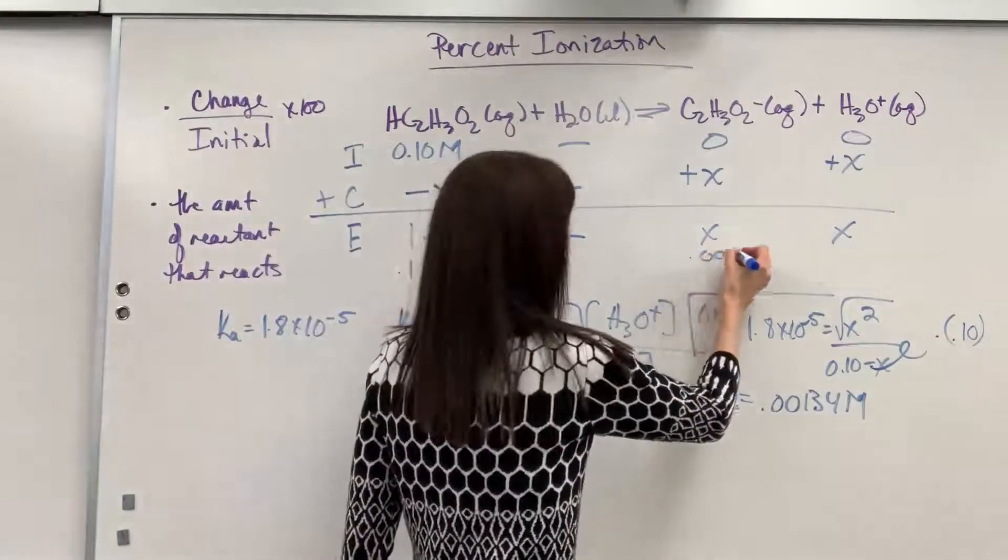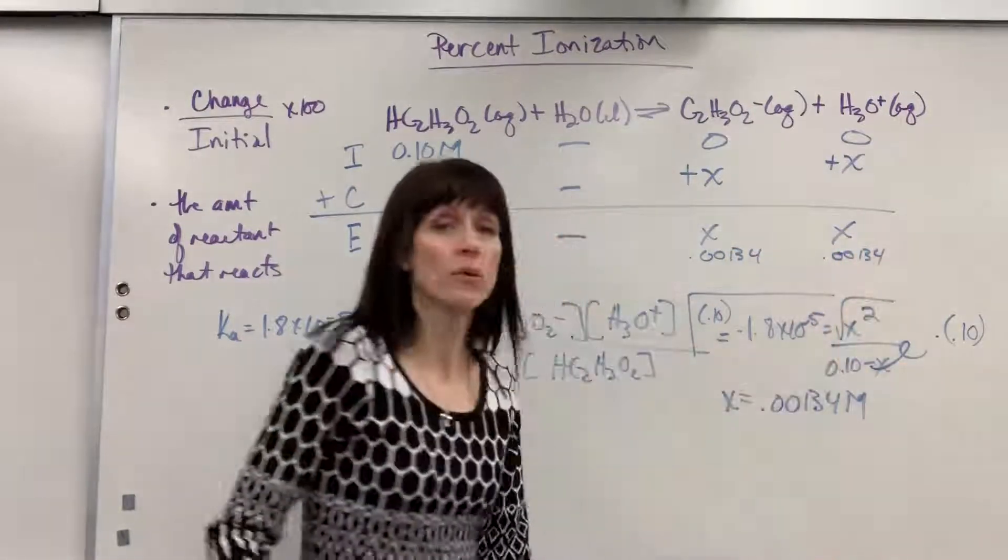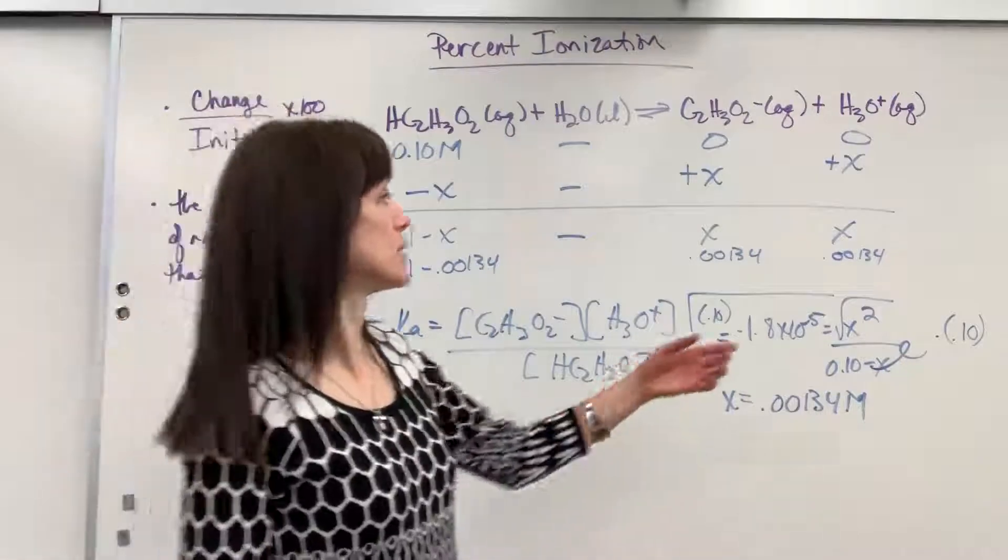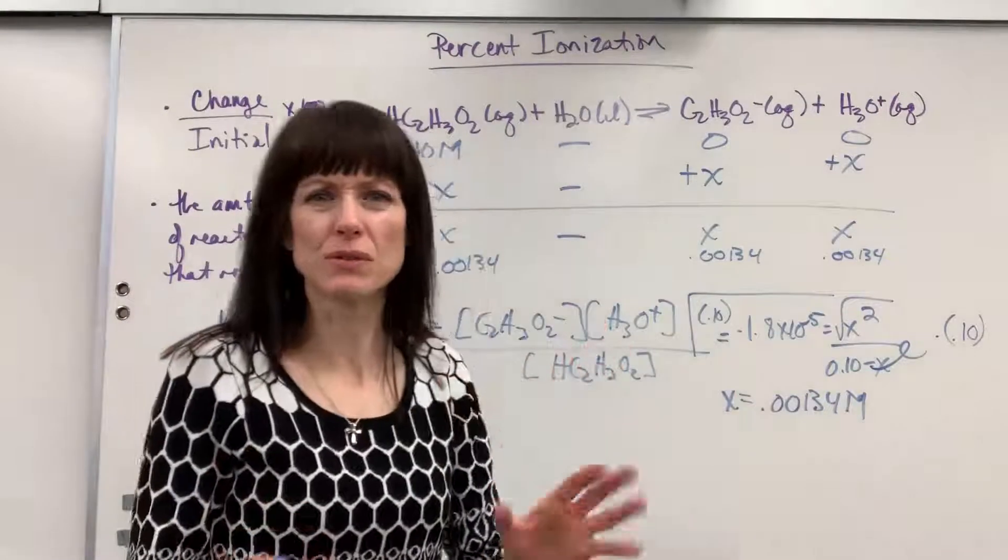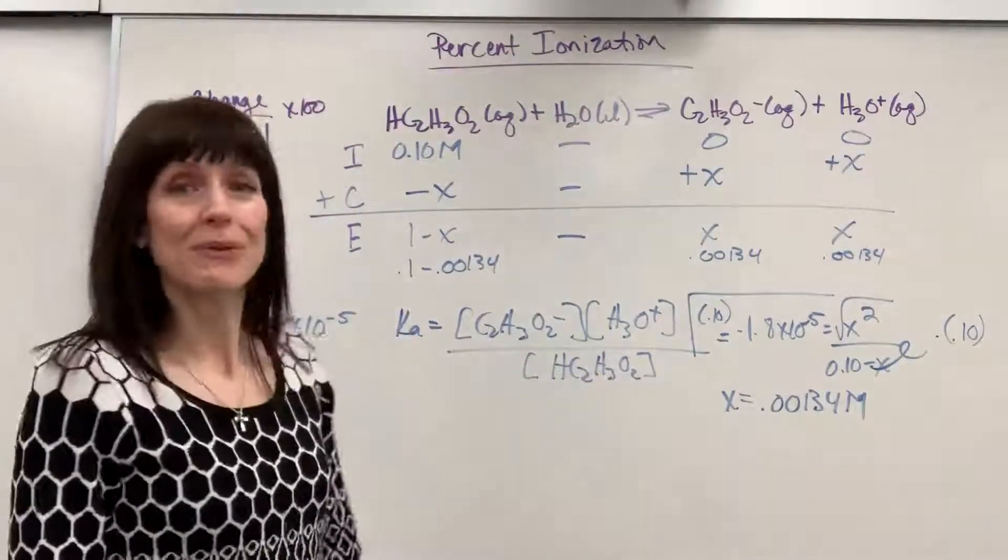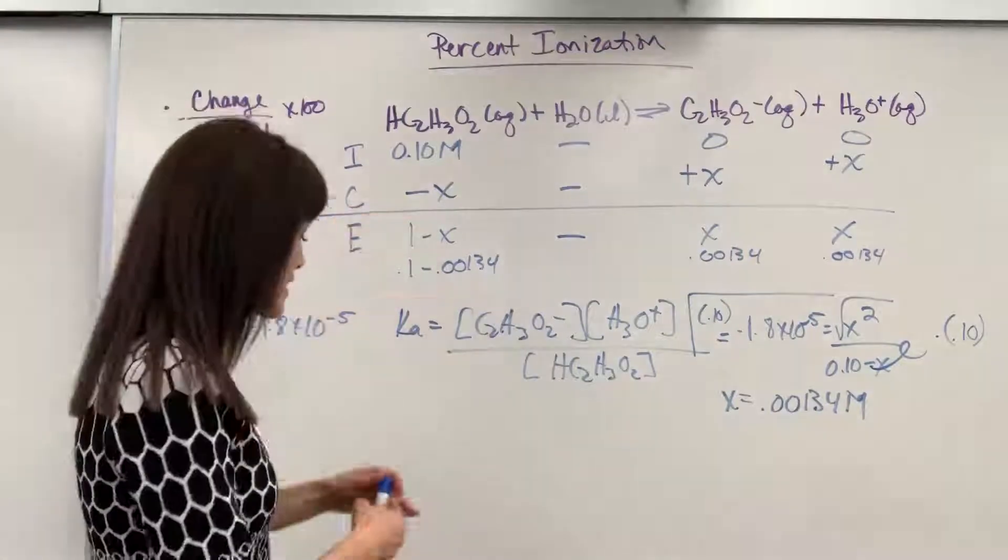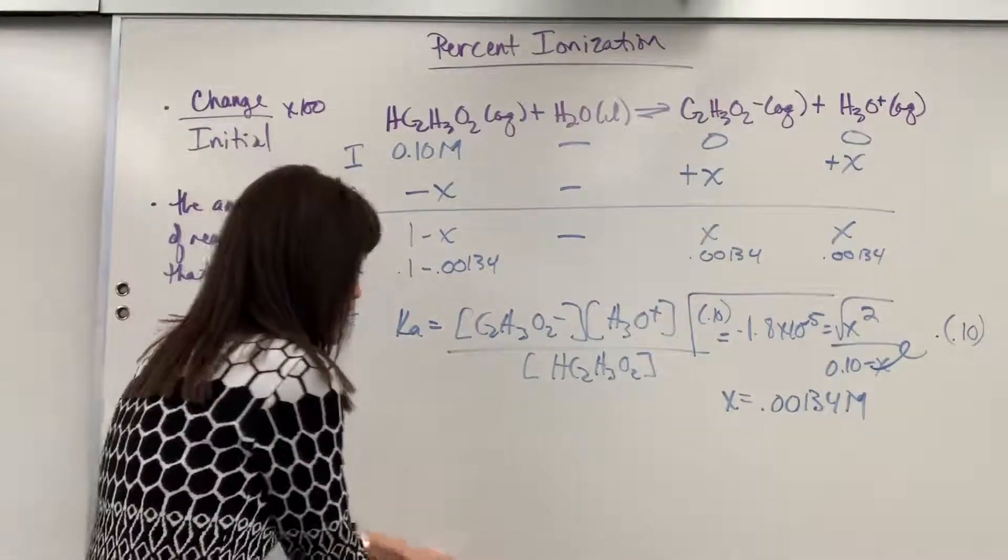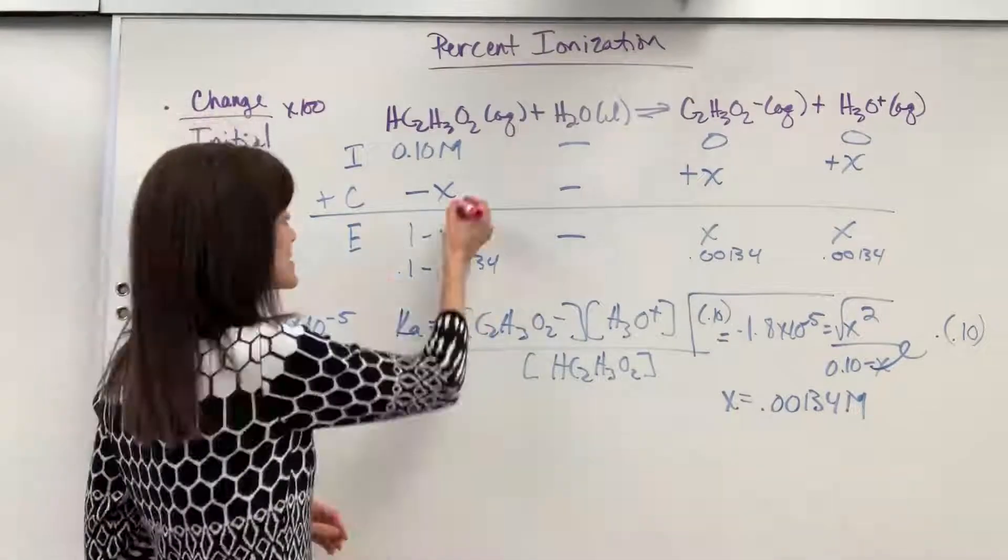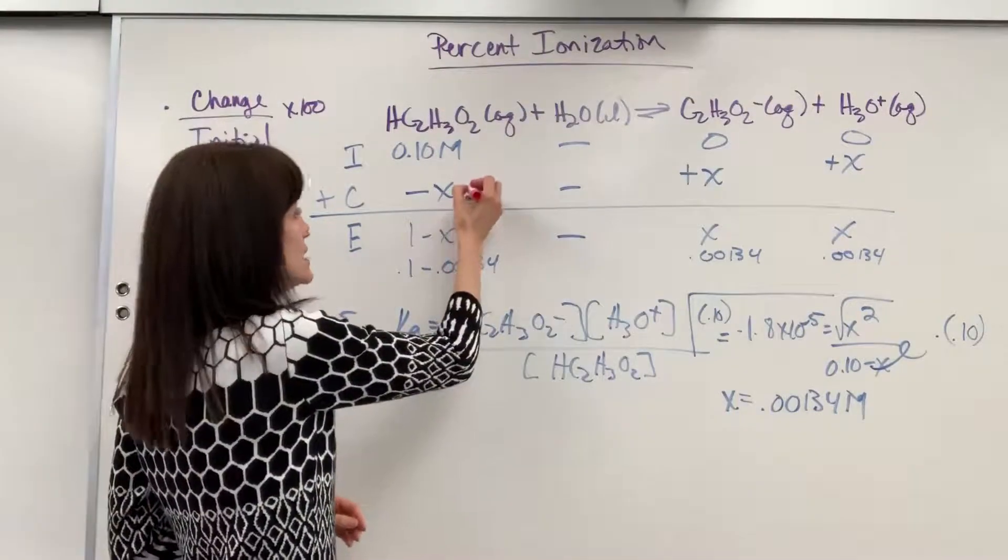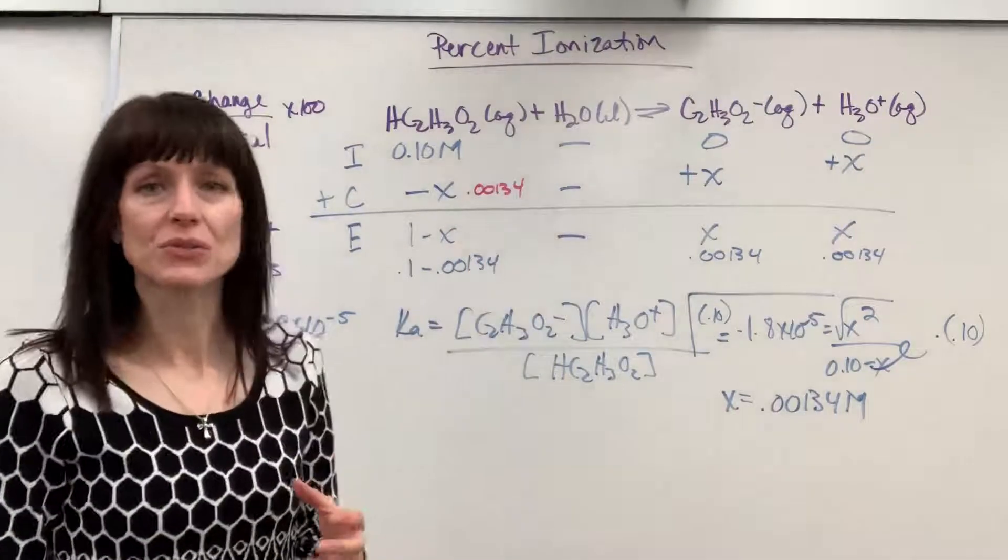Now I'm here, 0.00134. So if I wanted to get pH, I could do the negative log of this and it's going to be somewhere in the 2.5 range, something like that. But what we want is percent ionization. We found x. I'm going to write it down in pink so you can really see it. The change, the amount that reacts, the amount that ionizes is 0.00134. That's how much is going to react.